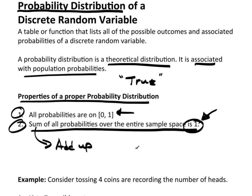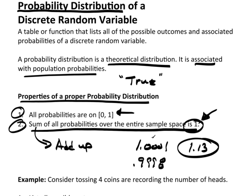If you add up all the probabilities and it's not equal to one, ask yourself why, because there's a problem. It could be a simple rounding issue — if you came up with 1.0001, that's simply rounding and you're fine. Likewise, 0.9998 or something like that is just rounding, not a big deal. But if you came up with 1.13, I would get seriously concerned very, very quickly.